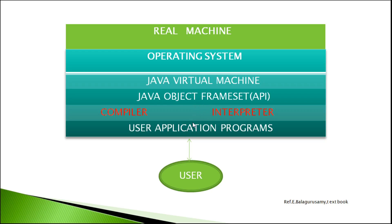The user application program uses the compiler, which converts into the bytecode and stores it in the Java Virtual Machine. The compiler takes the user program source code — the .java file — and converts it into a class file, which is stored in the Java Virtual Machine.